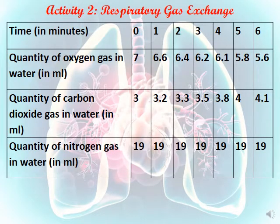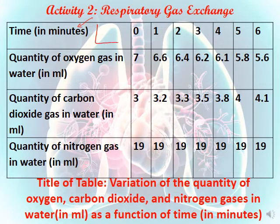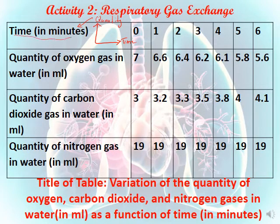Now we move to this activity on respiratory gas exchange. This table shows the variation in the quantity of oxygen, carbon dioxide, and nitrogen gases in water in milliliters as a function of time in minutes. We want to draw a graph from this table. On the x-axis we have time in minutes, and on the y-axis we have the quantity of gases — either oxygen, carbon dioxide, or nitrogen.